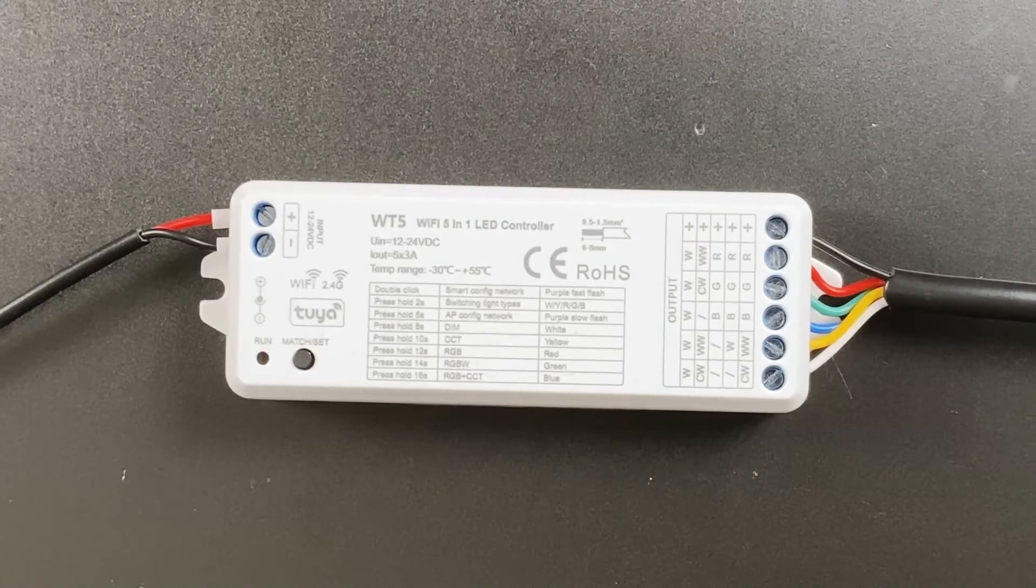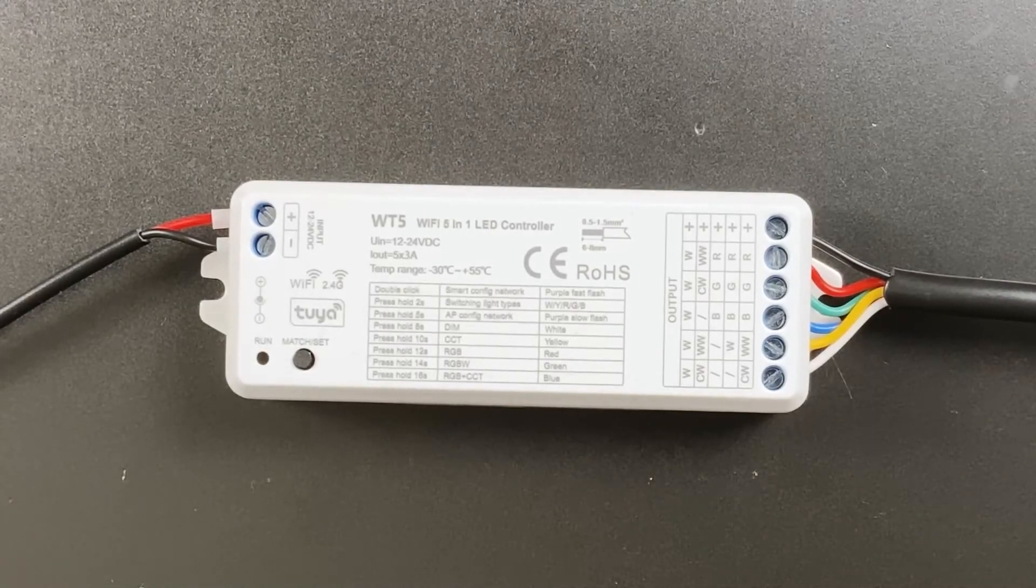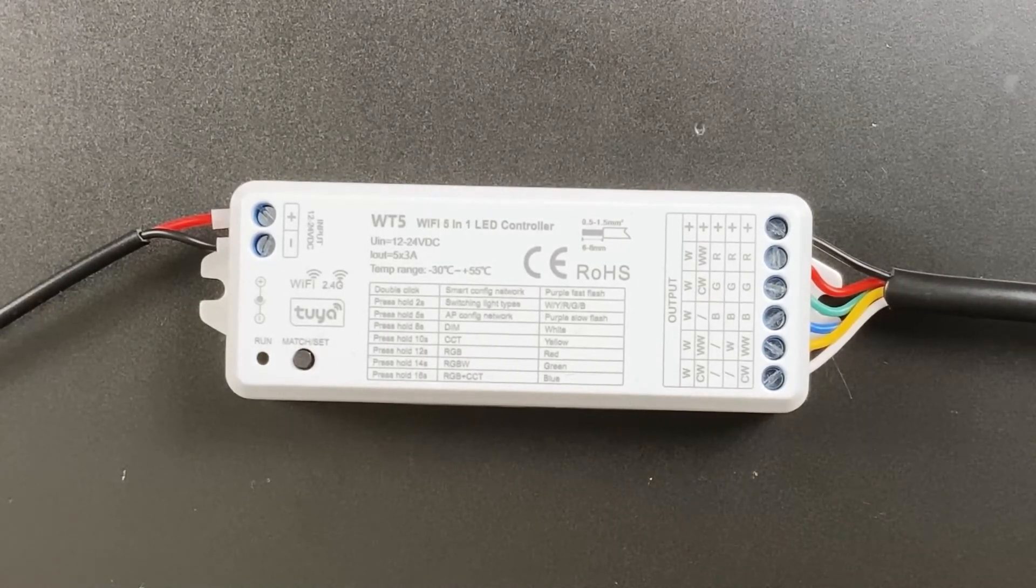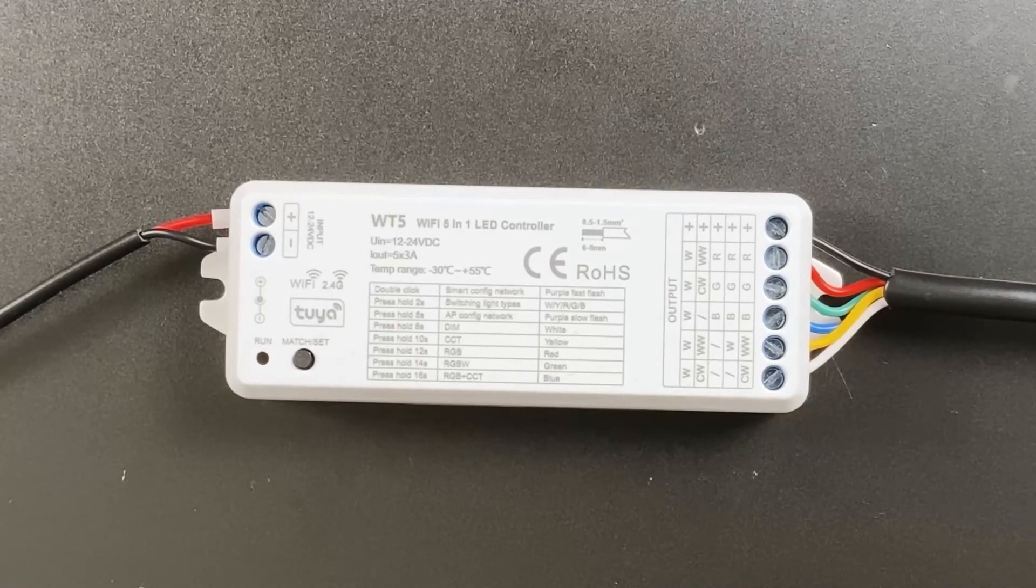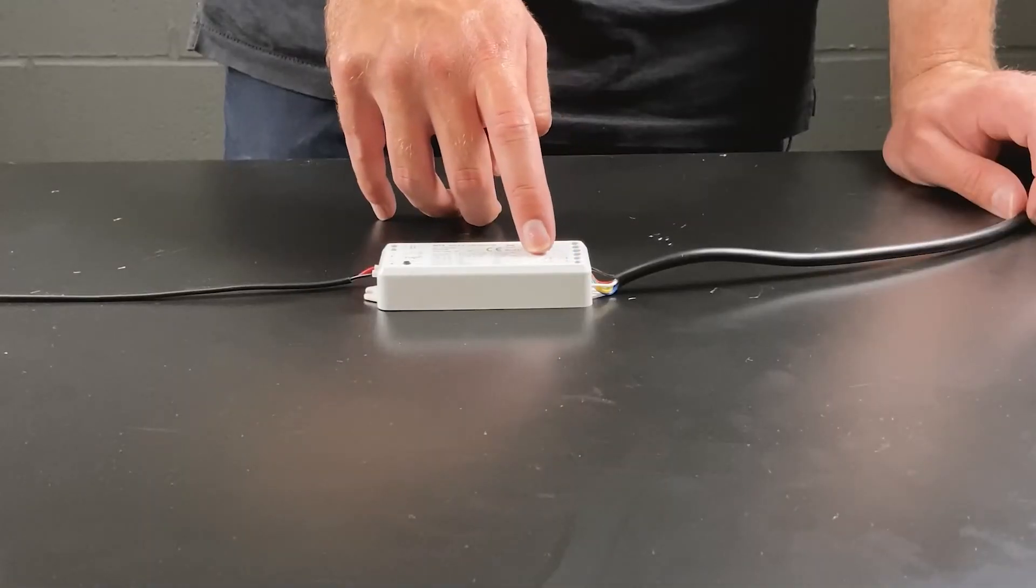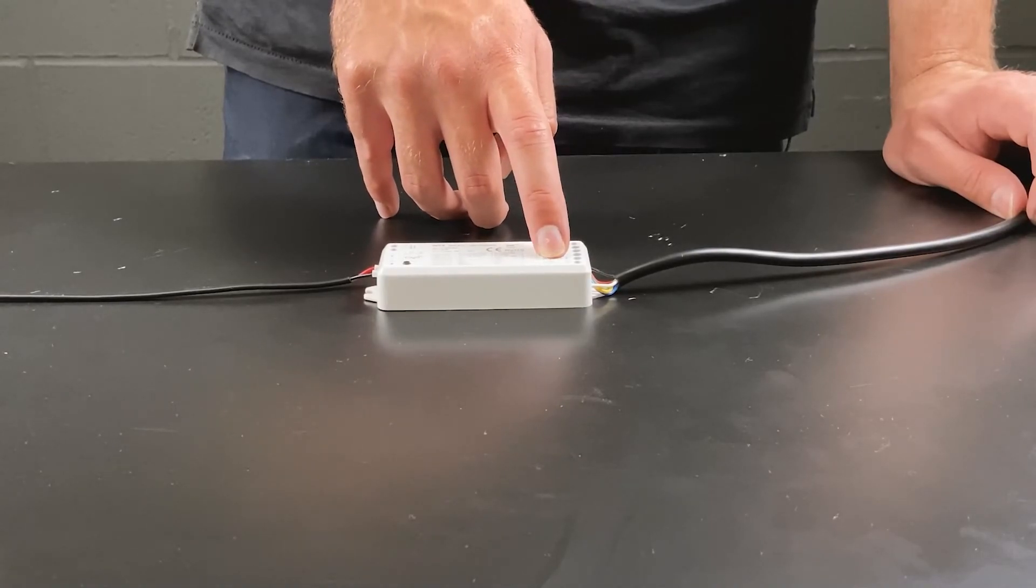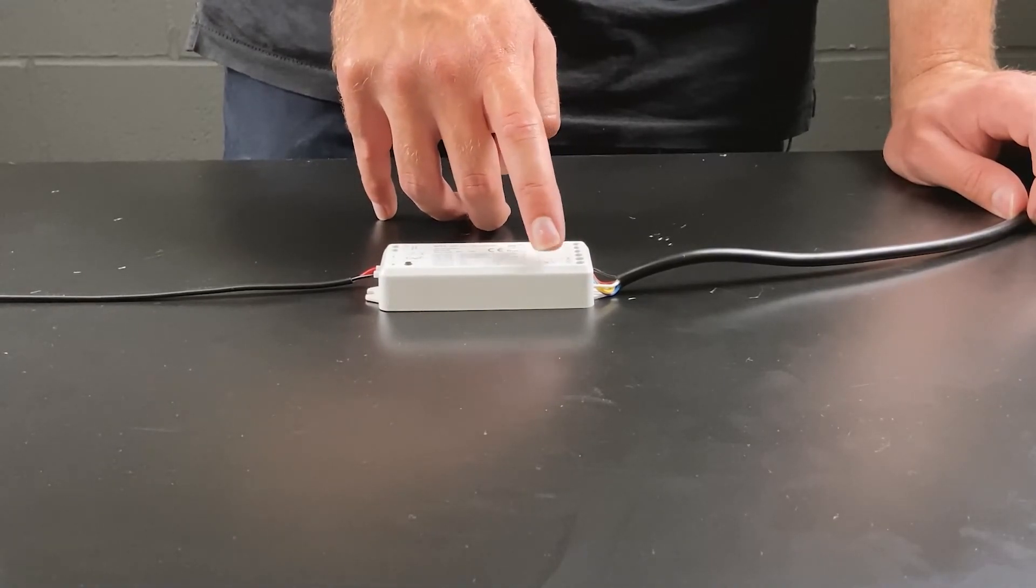The yellow wire on the RGB CCT tape will go into WW on the WT5 and the white will go to the CW on the WT5. This allows you to change the color temperature of the white channels from warm white to cool white.